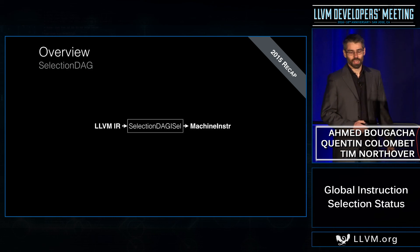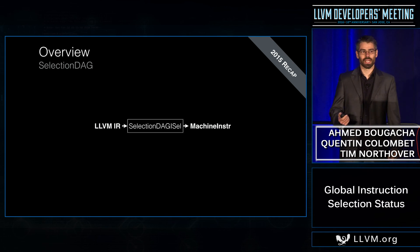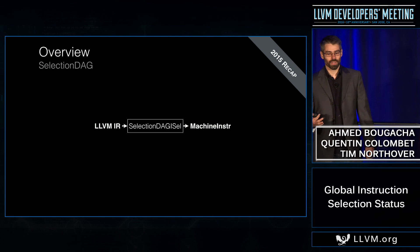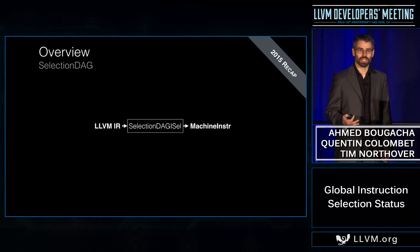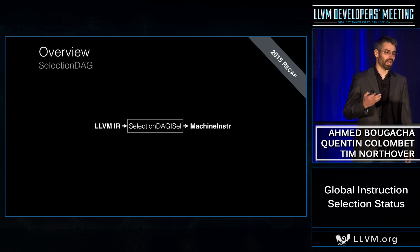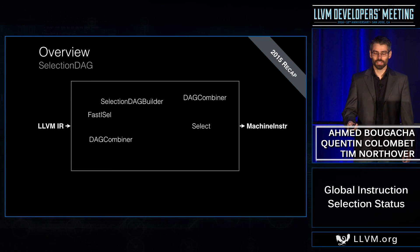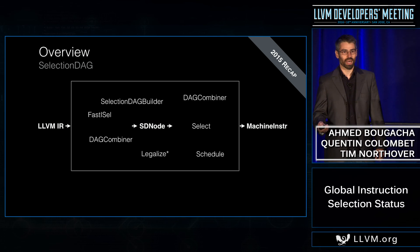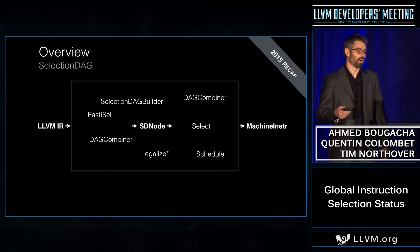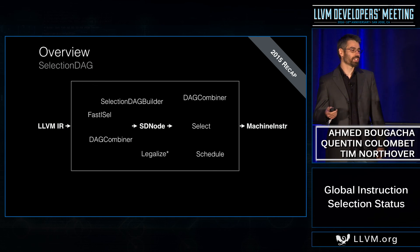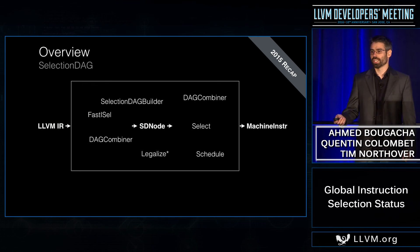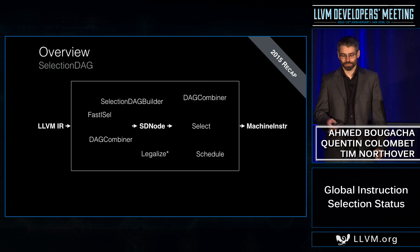So first, what do we have right now? We have SelectionDAG. From a high-level point of view, SelectionDAG is pretty simple — it basically takes LLVM-IR as input and produces machine instructions as output. But when you look closer, it's actually doing a bunch of things, like combines, legalization, scheduling, select, and so on. Moreover, it has an additional intermediate representation that we call SelectionDAG nodes. So to summarize, it's quite complicated.